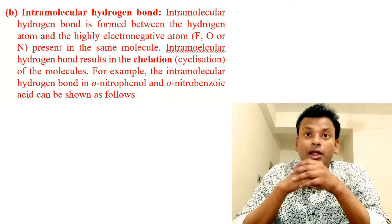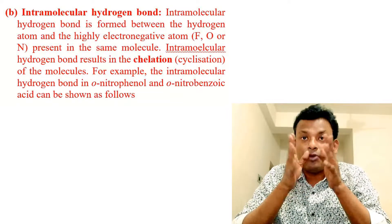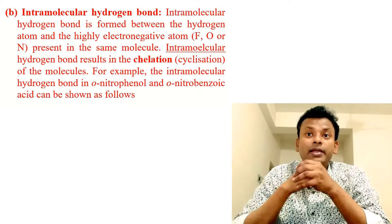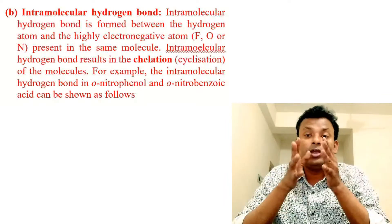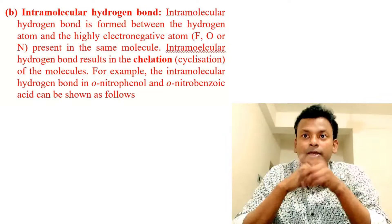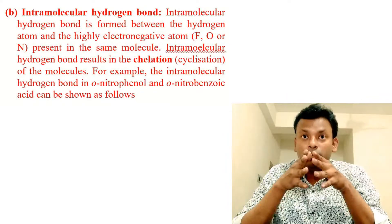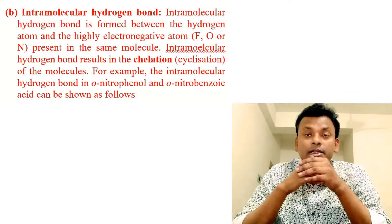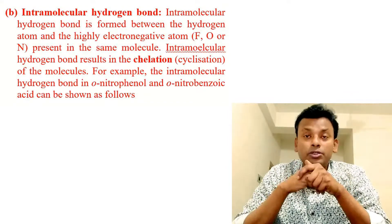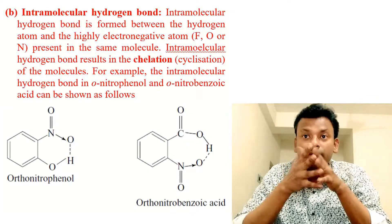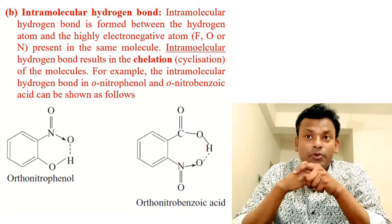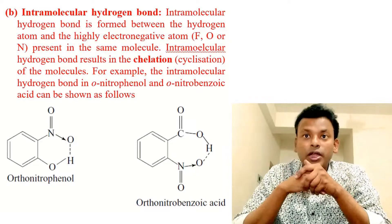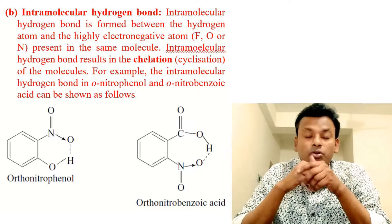The second type is the intramolecular hydrogen bond. Intramolecular hydrogen bond is formed between the hydrogen atom and the highly electronegative atom — fluorine, oxygen, or nitrogen — present in the same molecule. Intramolecular hydrogen bonding results in the chelation of the molecules. For example, intramolecular hydrogen bonds in ortho-nitrophenol and ortho-nitrobenzoic acid can be shown as follows.